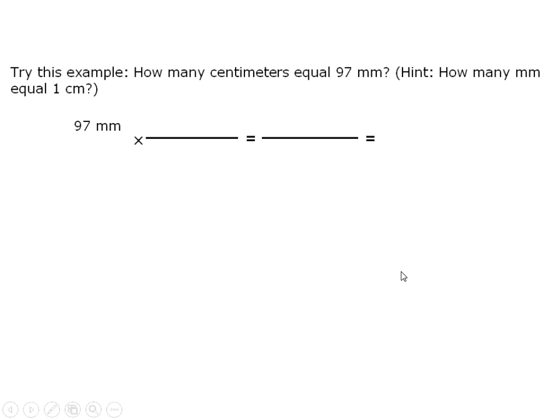Okay, another quick example. Let's say we have a measure of 97 millimeters. We want to know how many centimeters that is. Again, you're going to need to know the relationship between our units of interest, and before you even worry about that, you might want to set up your conversion factor with the units in the proper location.